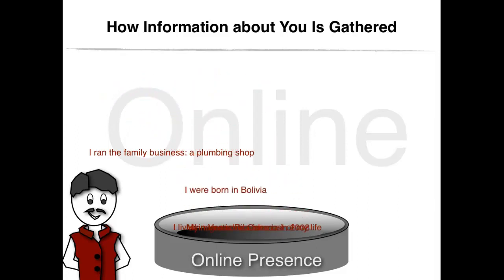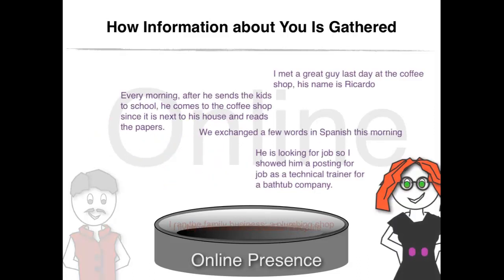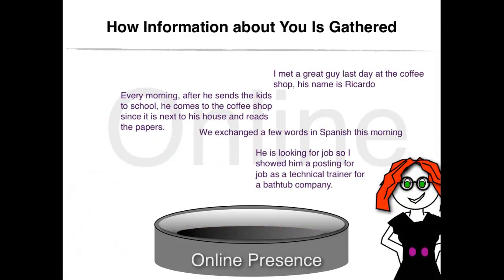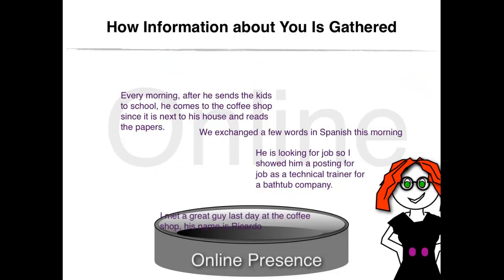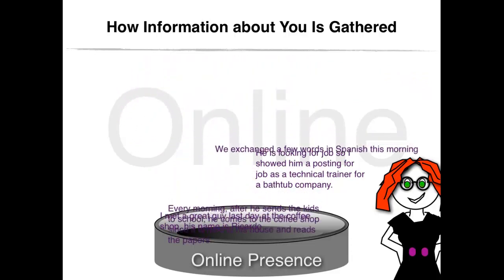You also shared photos, videos, contacts, interests, moods, status updates, and more. On the other hand, any online user can share correct or incorrect information about you. He or she could, for example, tag you in a photo or add your name to an event without you knowing.